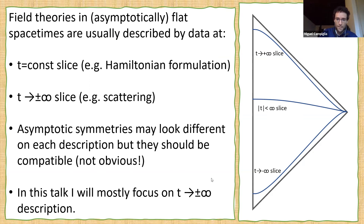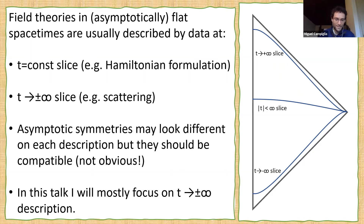When we study asymptotic symmetries, one can study them in these different formulations, and in general they will look different. We should at the end of the day have compatible descriptions and compatible symmetries regardless of how we are describing them — and as I will illustrate, this is not always obviously the case. I will mostly focus on the late-time description and mostly for the case of massless fields, so most of my talk will be based on the symmetries at null infinity.